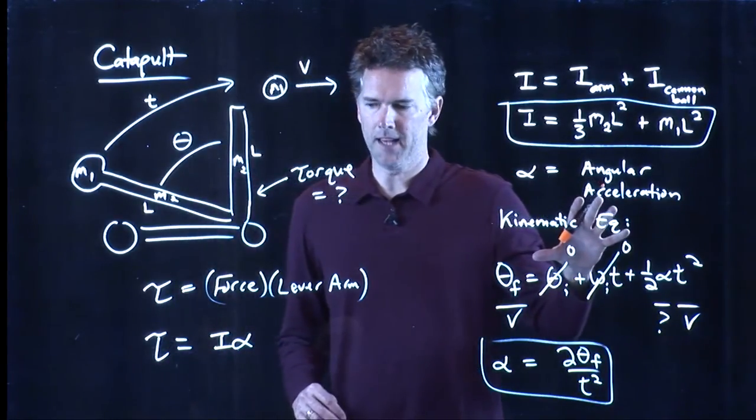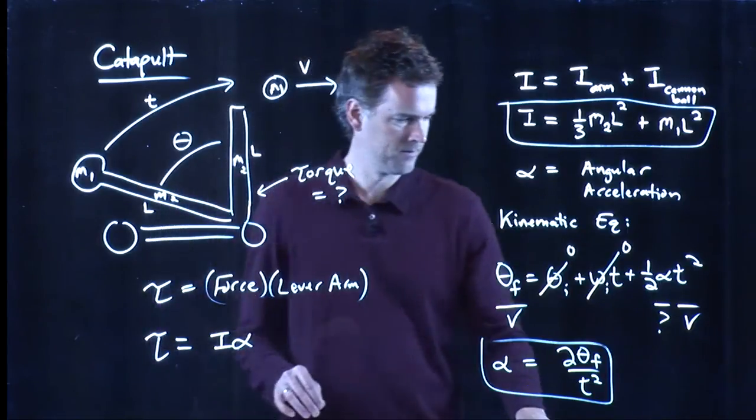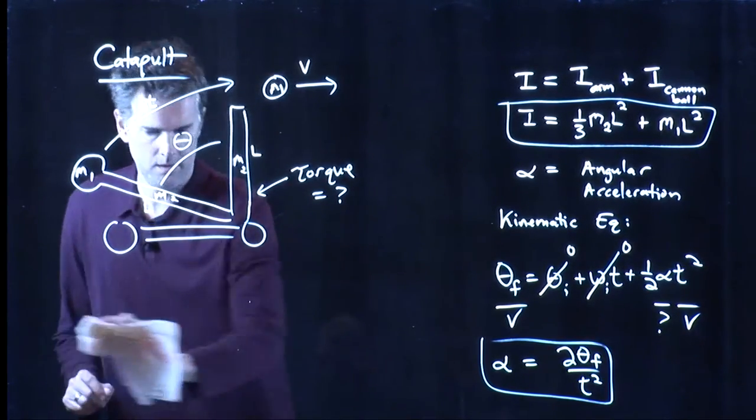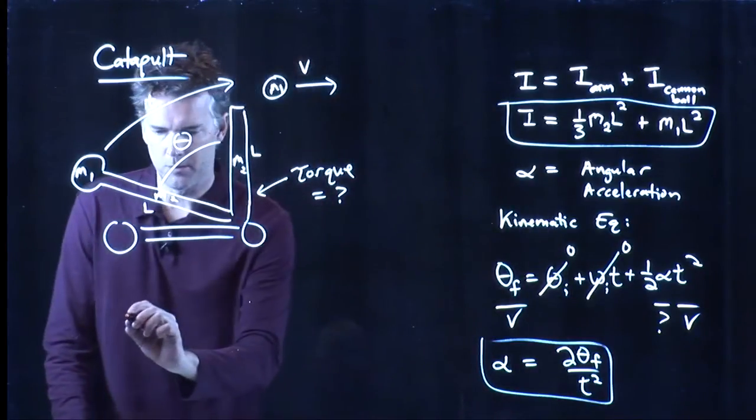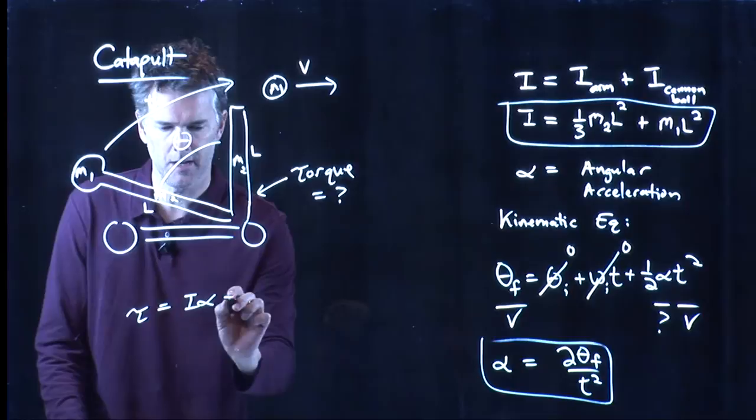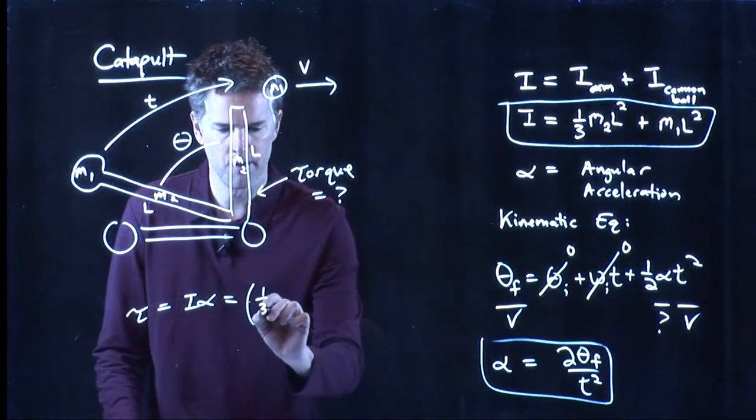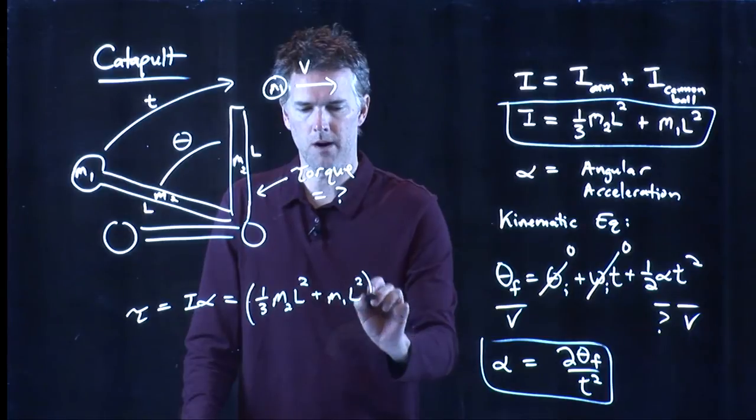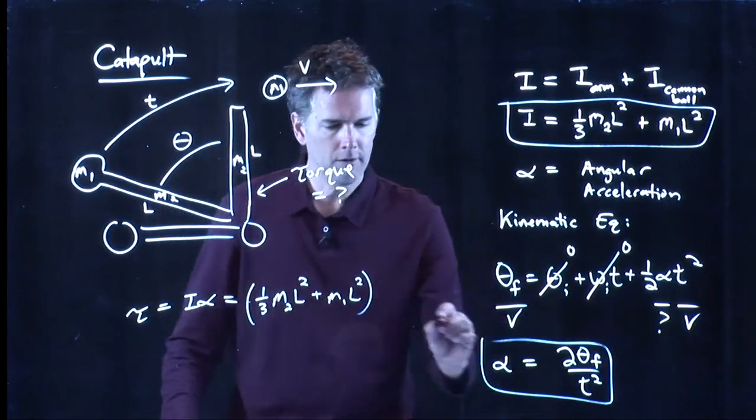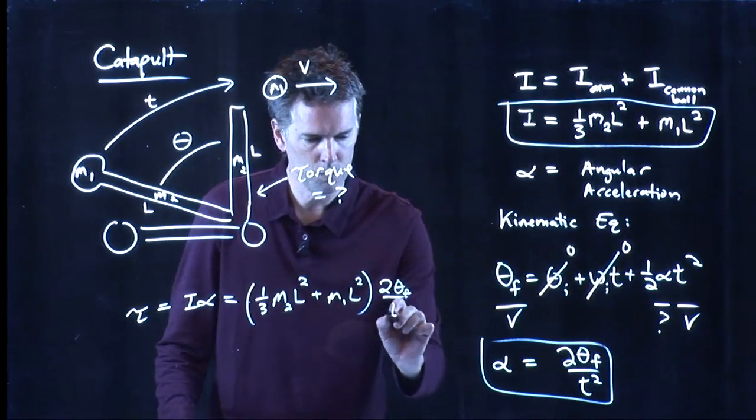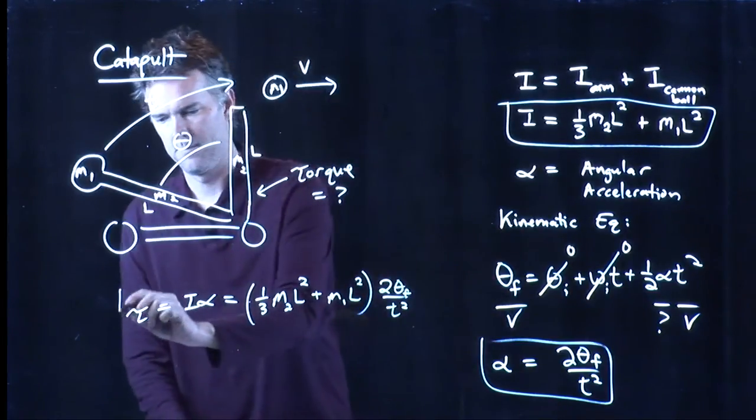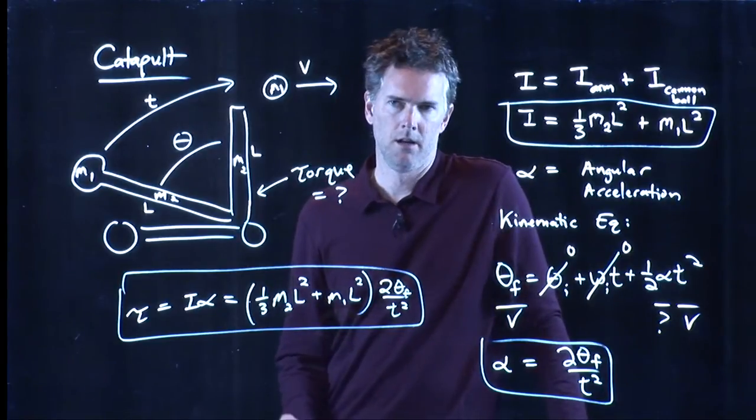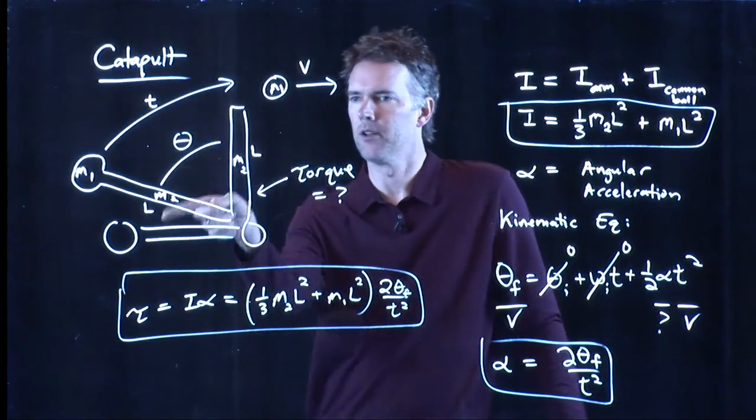And so now we can tie all this stuff together and calculate the torque. So torque is equal to i times alpha, which is one-third m2 l squared plus m1 l squared, all of that times alpha, which we said was 2 theta f over t squared. And if you know all these numbers, then you can plug it in and calculate the torque. What is the torque to cause this thing to rotate?